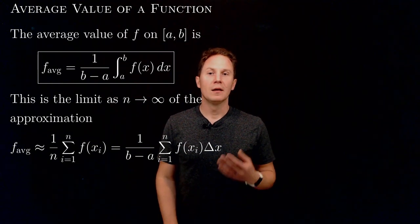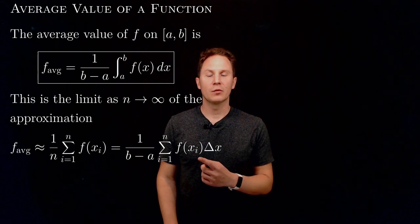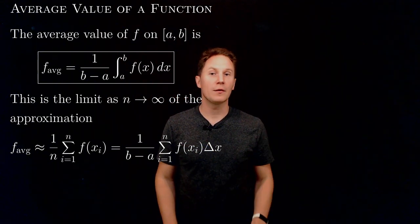Letting n go to infinity, delta x goes to zero and the expression that you see here, this approximation, turns into this definite integral.